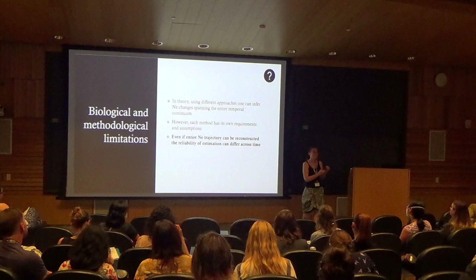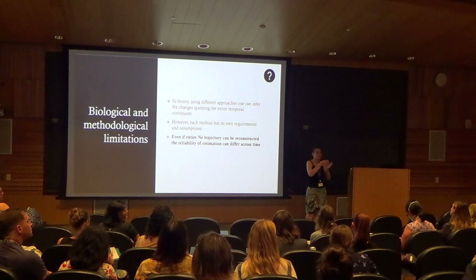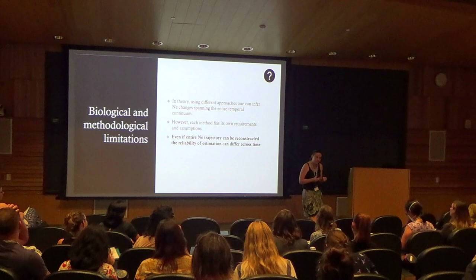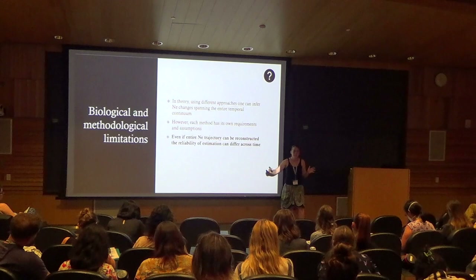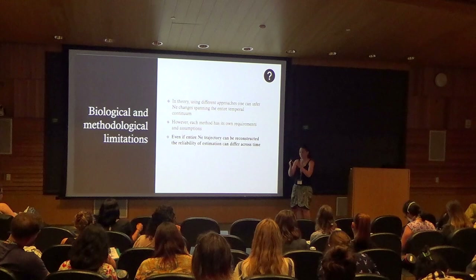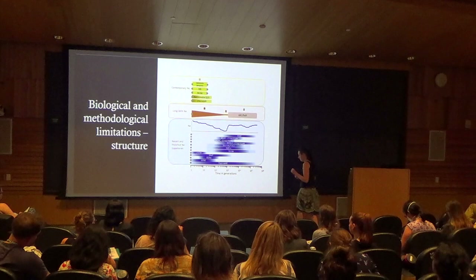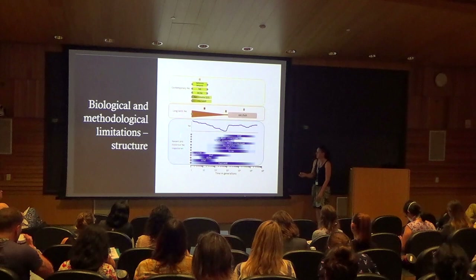In theory, yes — we can apply different methodological approaches to bridge the contemporary and historical perspective. However, each method has its own requirements and assumptions, and even if an Ne trajectory can be reconstructed over extended periods of time, you really have to keep in mind that the reliability of estimation can differ at different times. This comes from the data itself: different methods require different data — sometimes just a single genome, sometimes linkage information or a recombination landscape across the genome, sometimes a small sample size and sometimes many individuals.